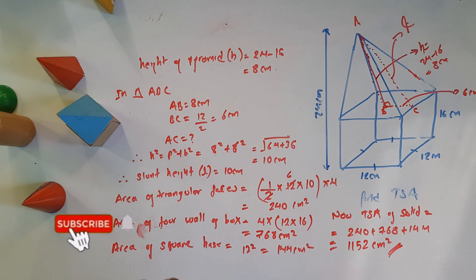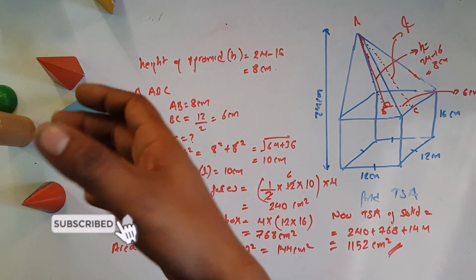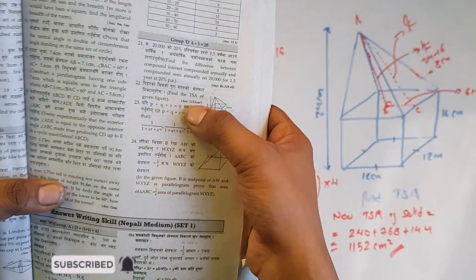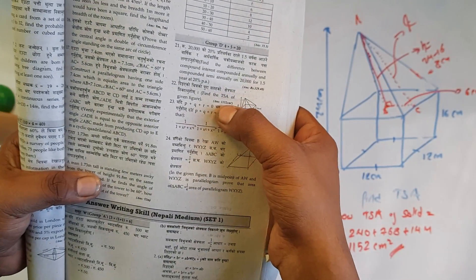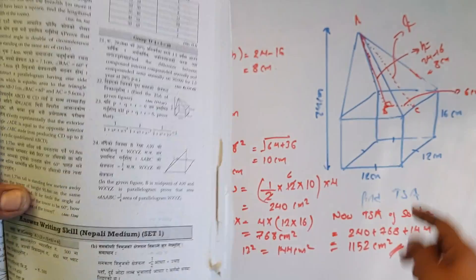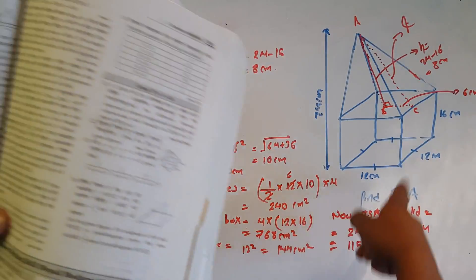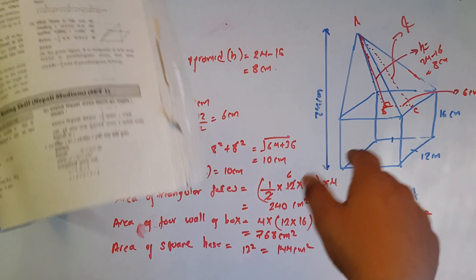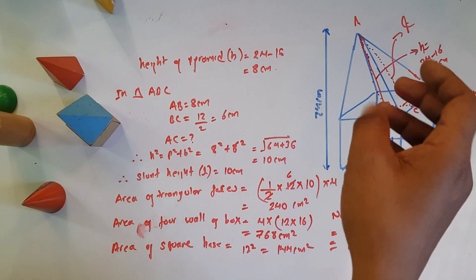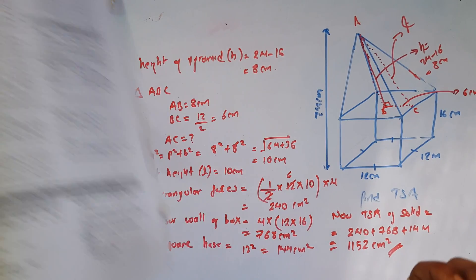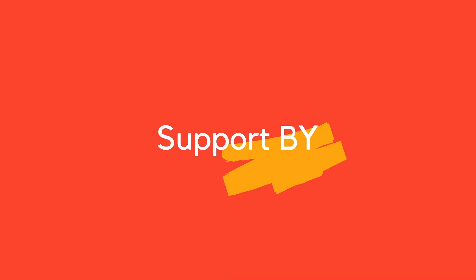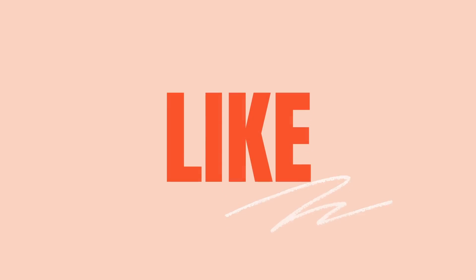The total surface area of the given solid is 1,152 cm². See you in the next video.